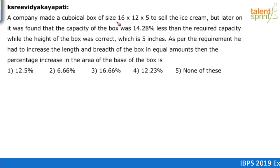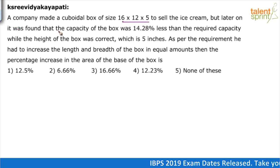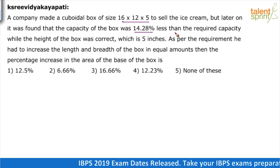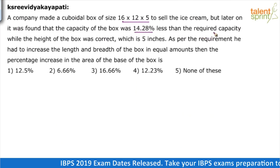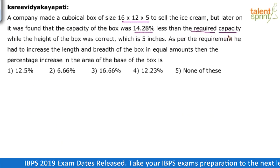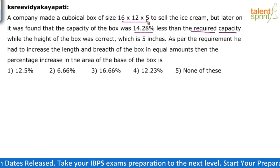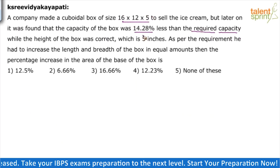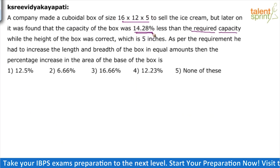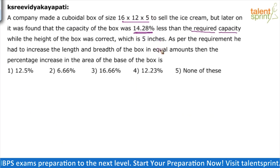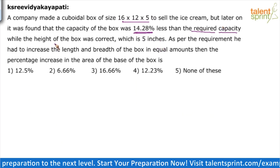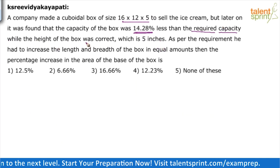A company made a cuboidal box of size 16 by 12 by 5 to sell ice cream, but it was found that the capacity of the box was 14.28% less than the required capacity. They needed some capacity and made a box of dimension 16 by 12 by 5, but after making it they found the capacity was 14.28% less than what they needed, while the height of the box was correct.